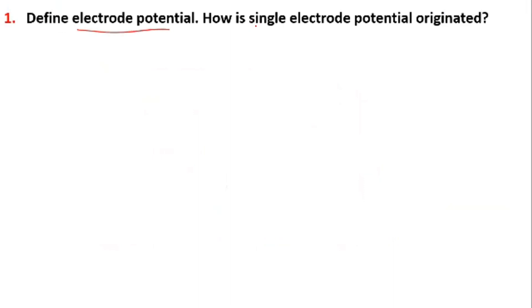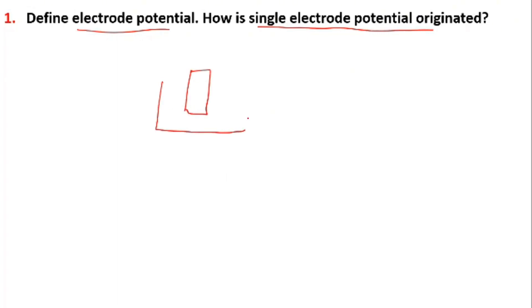How does single electrode potential originate? What is our electrode potential? Even though the electrode is like this, it is deep in the ions.